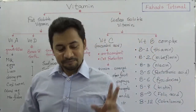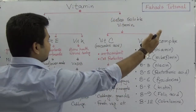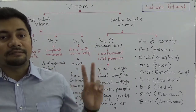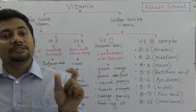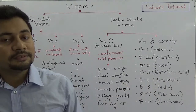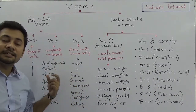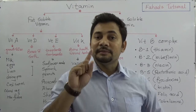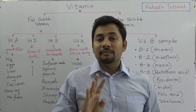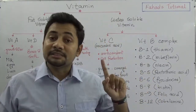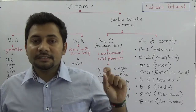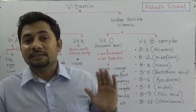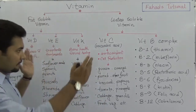Vitamins are divided into two types based on solubility: fat-soluble vitamins and water-soluble vitamins. If vitamins are soluble in water, they are called water-soluble vitamins; if soluble in fat, they are fat-soluble vitamins. The fat-soluble vitamins are vitamin A, D, E, and K. The water-soluble vitamins are vitamin C and vitamin B complex — it's called B complex because there are eight types of vitamin B in this category.